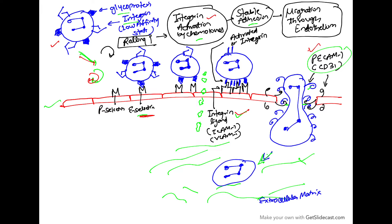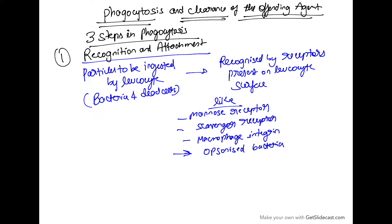Hello everyone. Continuing with our series on acute inflammation, we have already discussed what acute inflammation is, what are the vascular events associated with acute inflammation, then the cellular events. We have seen the diagram of how leukocytes migrate across the endothelium. Now we will discuss phagocytosis and the clearance of the offending agent.